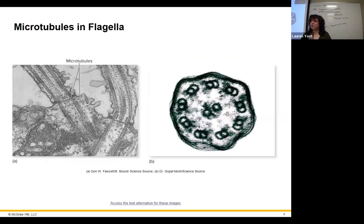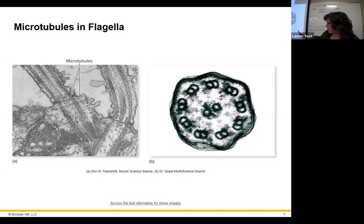You'll see this when we look at pond water — you get to see all the organisms in it. They swim around and you'll see all these different creatures. The picture here shows those microtubules — the little circles are the nine pairs and then two right in the middle.